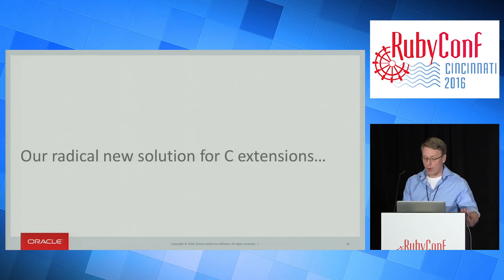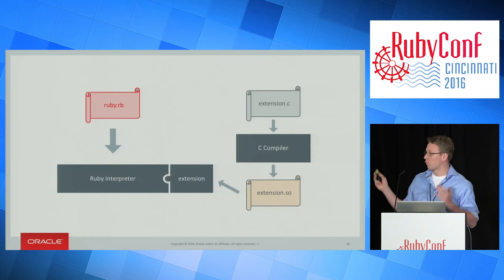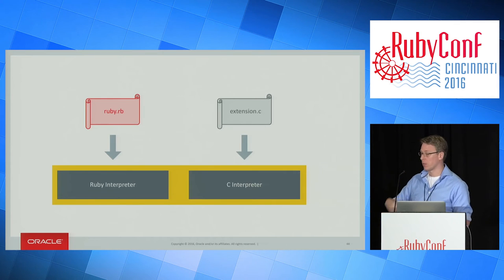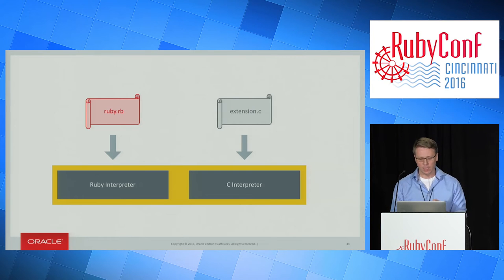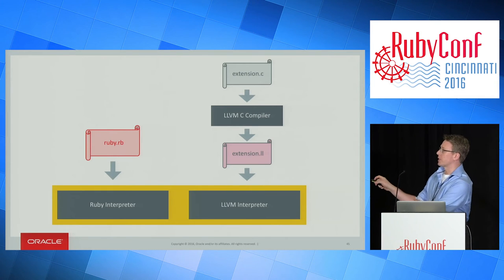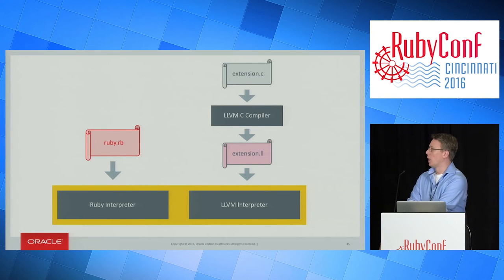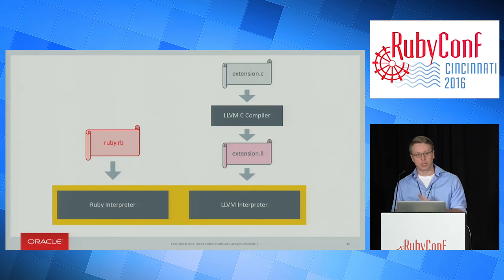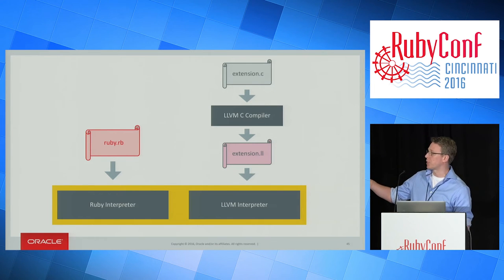Going back to C extensions — this is our radical solution. The current model is that Ruby runs on a Ruby interpreter, but C extensions are compiled separately and plugged in. Our idea is simple: we're going to take the C code and interpret it using a C interpreter. We already have a Ruby interpreter, so let's write a C interpreter and run it on top. When we want to make changes to the way Ruby works, we simply make changes to the way our C interpreter works to match. In practice, we take your C extension, compile it using the LLVM C compiler — that's Clang — which produces an intermediate representation, a simple version of C we call IR, and then we interpret that. The other benefit is that other languages like Go, Rust, C++, and Objective-C, as long as they compile to LLVM's intermediate representation, can all be run on top of the interpreter.